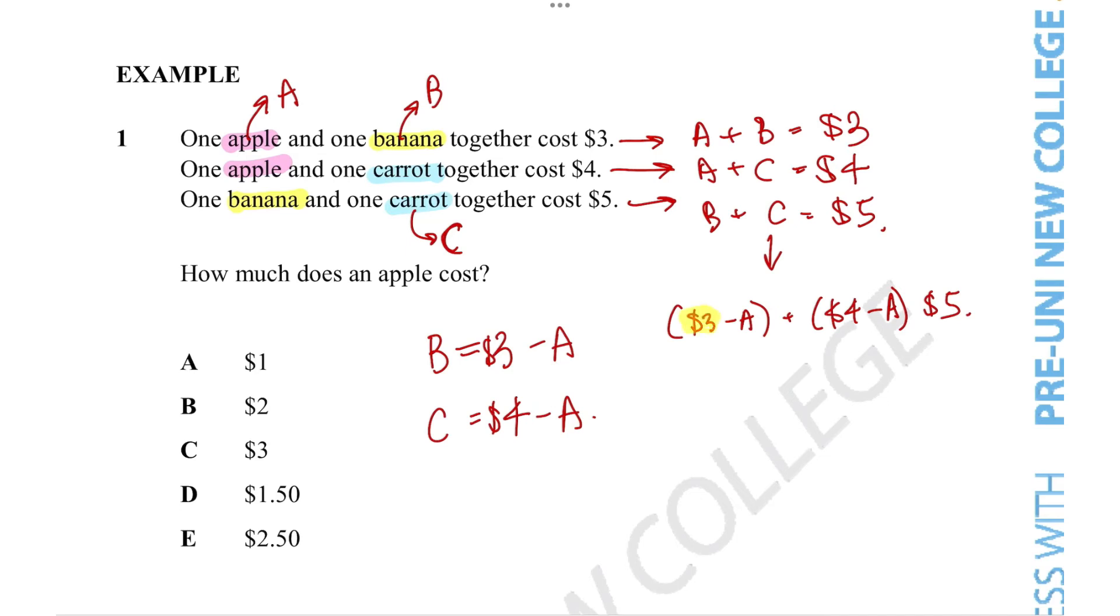Gathering all the numbers on this side, we get $3 + $4 = $7. And gathering all of the letters, which is -A - A, giving us -2A = $5. Making sure that all the numbers are on one side and all the letters are on the other side of the equal sign, we get $7 - $5 = 2A, giving us 2A = $2, so A = $1. Answer option A is the correct answer.